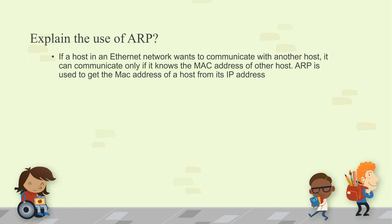Explain the use of ARP. If a host in an Ethernet network wants to communicate with another host, it can do so only if it knows the MAC address of the other host. ARP is used to get the MAC address of a host from its IP address. Without knowing the MAC address, the end-user machine cannot send traffic. ARP resolves the IP address into the MAC address, then sends traffic to that particular MAC address.